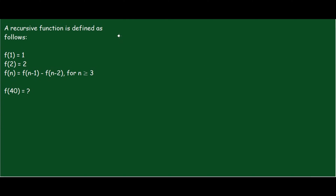Hello, let's do a problem. The question is: a recursive function is defined as follows — f(1) = 1, f(2) = 2, and f(n) = 2f(n-1) minus f(n-2) for every n value greater than or equal to 3. What is f(40)?